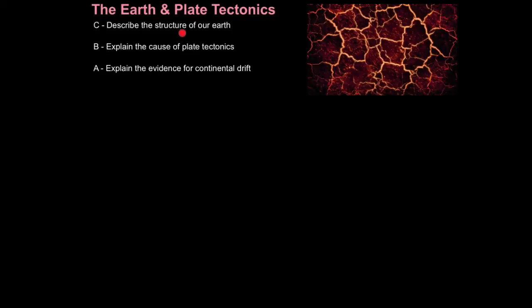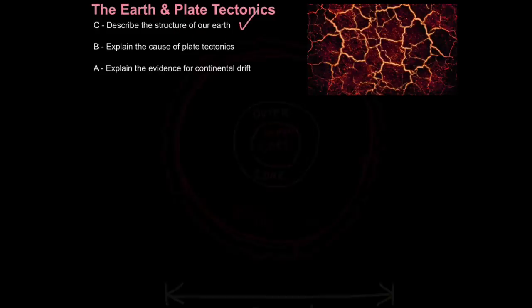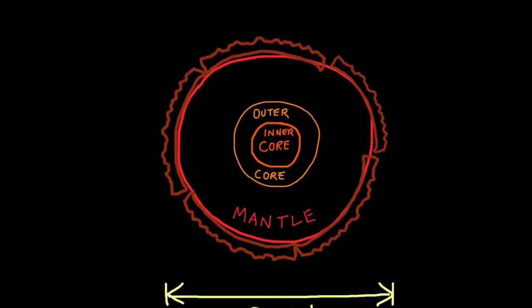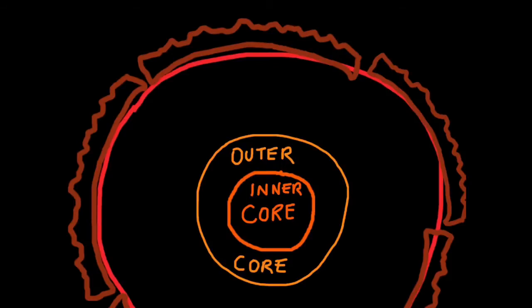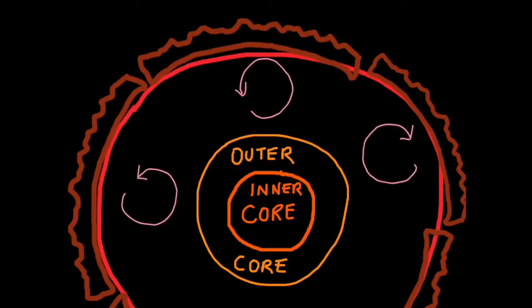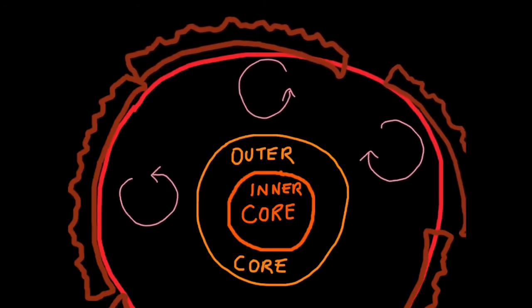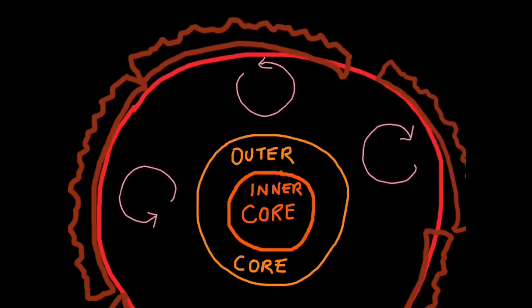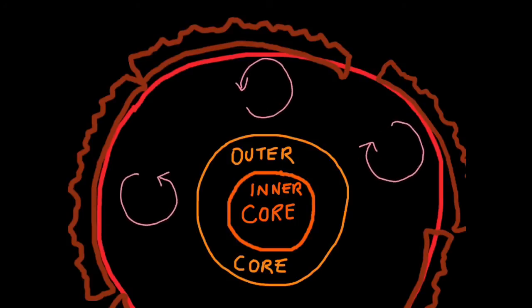Now you can describe the structure of our Earth. As mentioned, the Earth's crust is fractured and divided into giant moving plates. But what causes them to move? We get rotating currents of heat known as convection currents, which move the masses of rock that rest upon the mantle. These convection currents are responsible for moving the plates and driving the rock cycle.